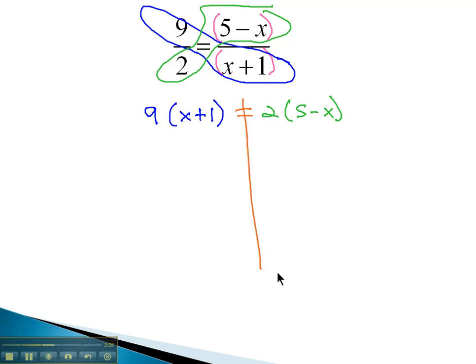If we balance through the equal sign, we can then solve this resulting equation. We know it's important to simplify first, so we're gonna distribute on both sides, giving us 9x plus 9 is equal to 10 minus 2x.